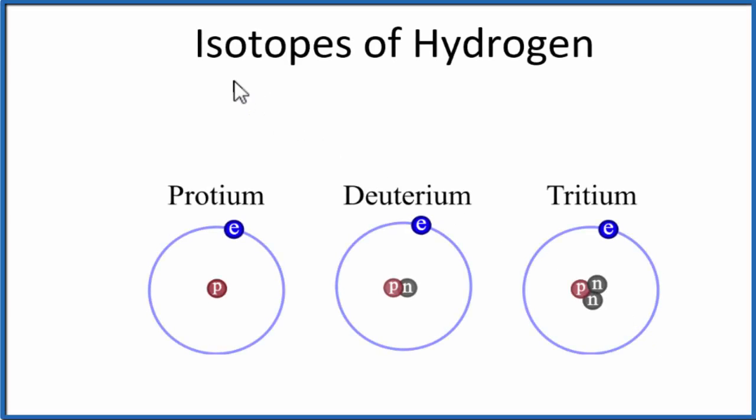When we learn about isotopes, often teachers will start with hydrogen, but that can be a bit confusing since hydrogen has some special characteristics not shared by other isotopes.